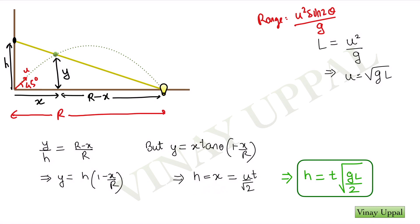And now, it is very straightforward. The x coordinate is simply the horizontal component of velocity into time. So u by root 2 into time. And I already know the value of u. And this is how I get the value of h.